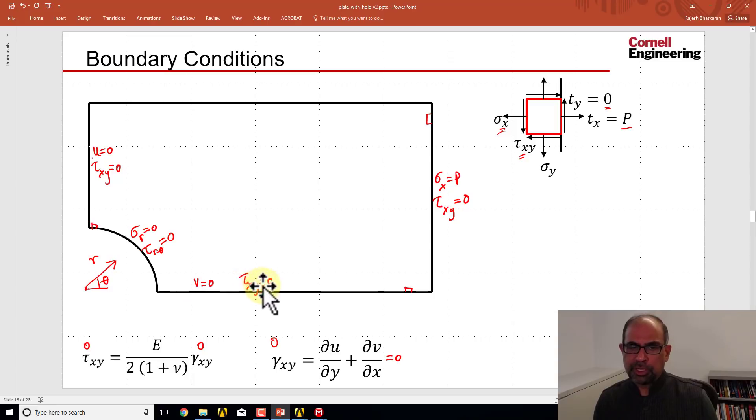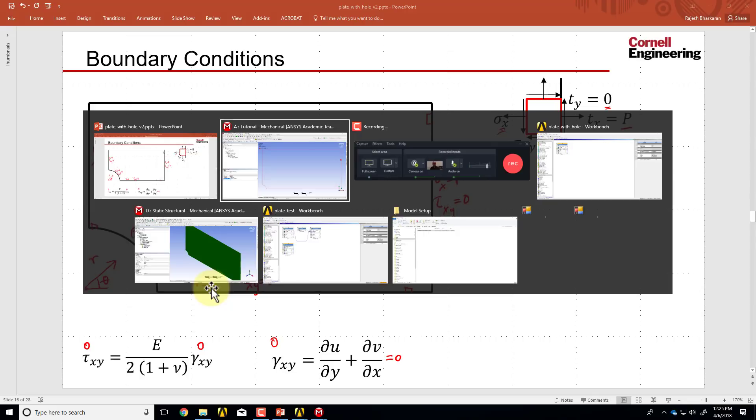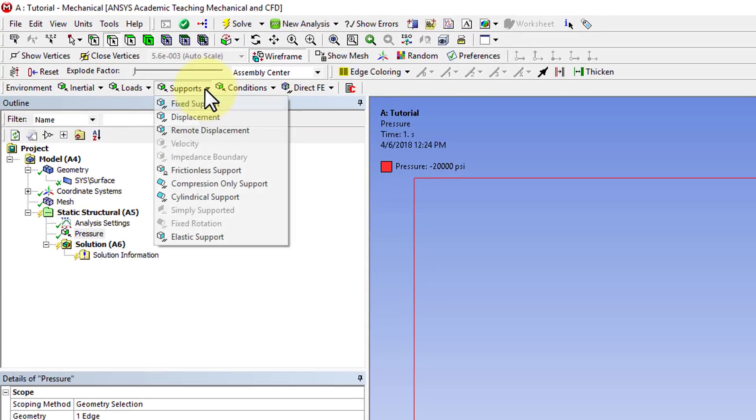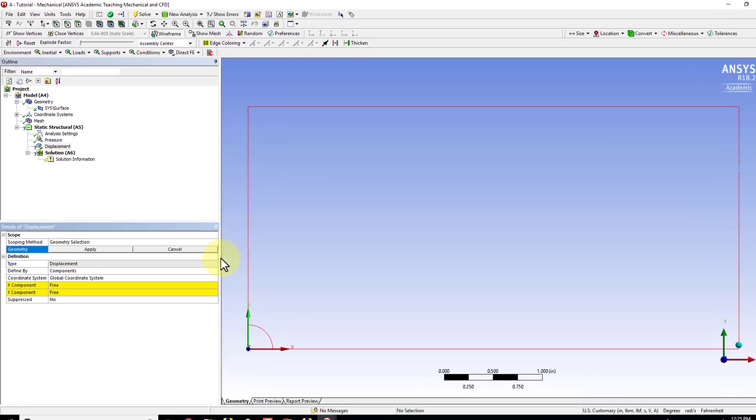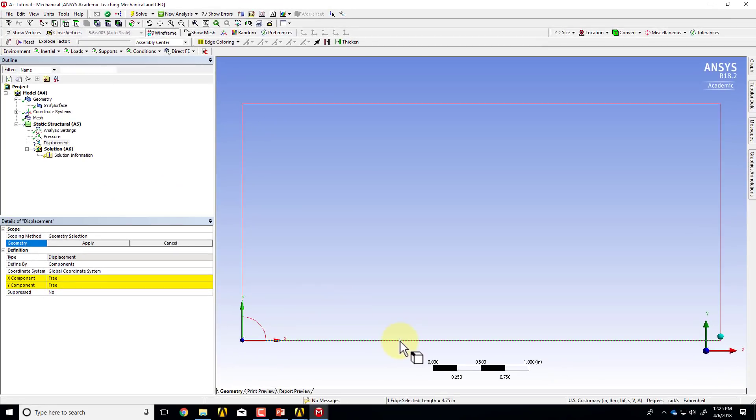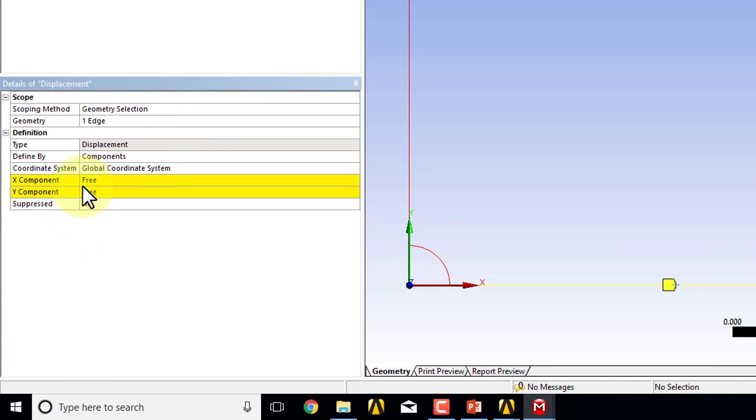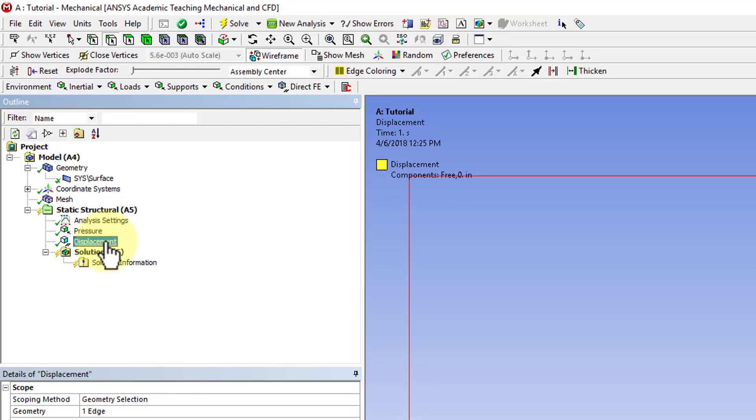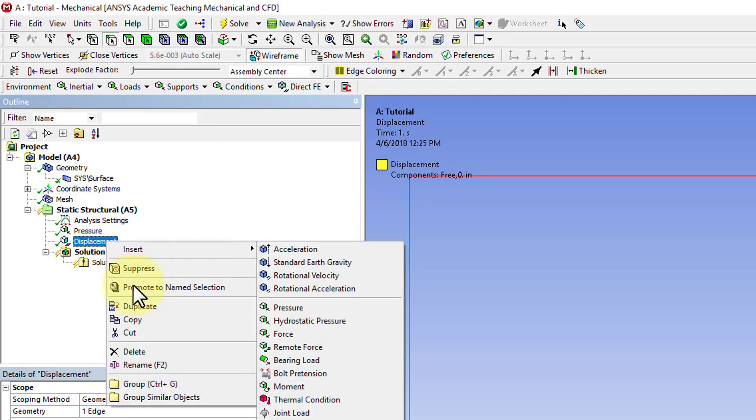As I've noted before, that really filters down to a condition on the derivatives of the displacement. That's a condition on the displacement. And let's set that equal to 0, v equal to 0. So I will go to supports, displacement, and I will select the bottom boundary. And just, we are setting the y component equal to 0.